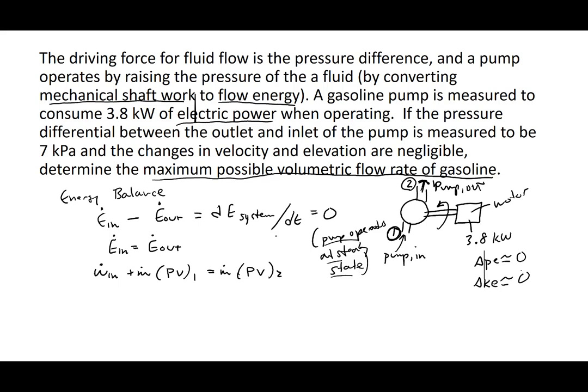Now I want to rewrite this equation. Work in equals the mass flow rate times (P2 minus P1) times V — I just subtracted the flow energy term over. So we have work in equals (P2 minus P1), which is delta P, multiplied by the specific volume and the mass flow rate. The problem is asking for the volumetric flow rate, so I want to write this in terms of volumetric flow rate.